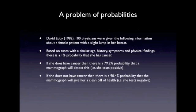This also means that there's a 9.6% probability that if she does not have cancer, then the mammograph will actually give a false positive — that is, it will indicate that there's cancer where it's not present.